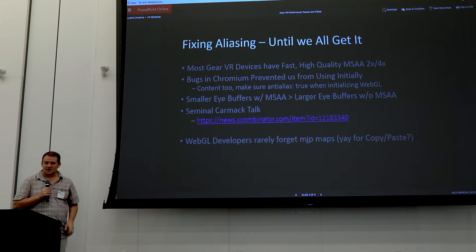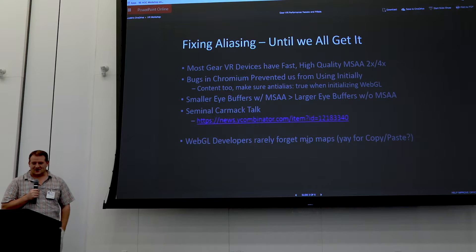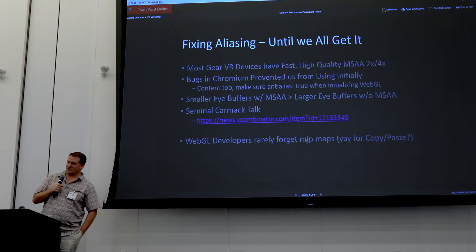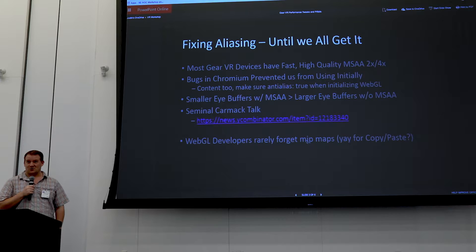On fixing aliasing — Carmack talks about this all the time, so I'd dedicate an entire slide to it. Most Gear VR devices have fast, high-quality MSAA 4x or 2x, and we highly recommend using it. It turned out that Chromium itself was unable to use it — there were a couple of bugs blocking certain drivers that are very prevalent on all Gear VR devices, including the S7.